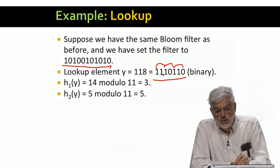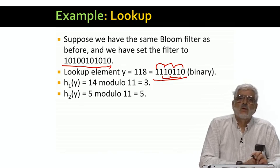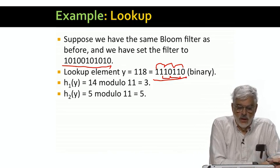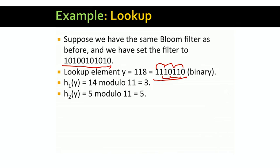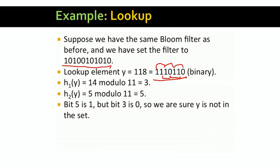The even positions give us 1, 0, 1, which is 5 in decimal, and 5 modulo 11 is 5. So h2 of 118 is 5. To test membership of y in the set represented by the bloom filter, we thus look at bits 3 and 5. Bit 3 is 0, bit 5 is a 1. That means 118 could not be in the set, because both would have been 1 if so. We say no, and that is the correct answer.